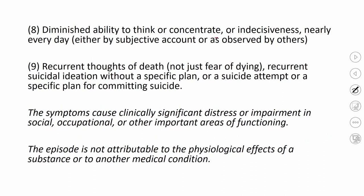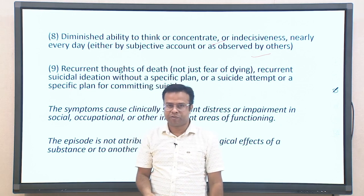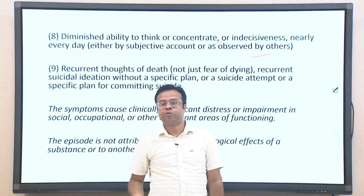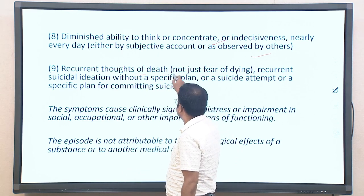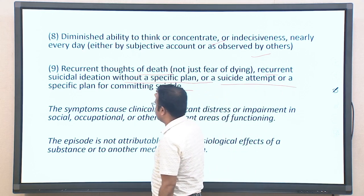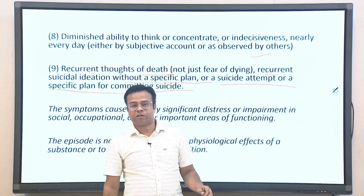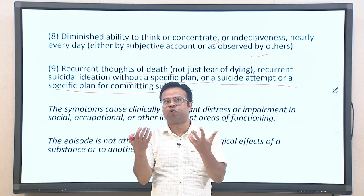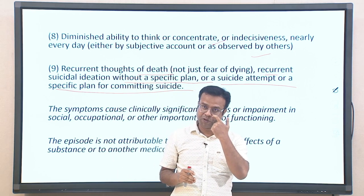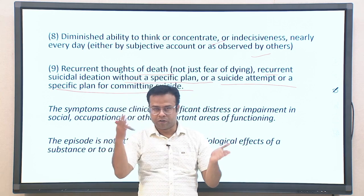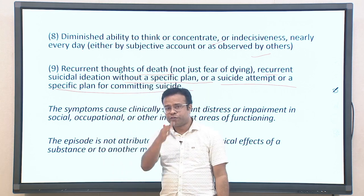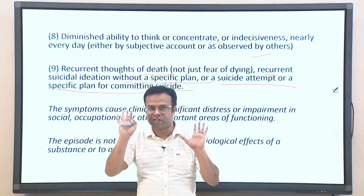Eighth is diminished ability to think, concentrate, or indecisiveness nearly every day — lack of concentration follows naturally from lack of interest. Ninth is recurrent thoughts of death, recurrent suicidal ideation without a specified plan, or a suicidal attempt or specific plan for committing suicide. Out of these nine symptoms, at least five should be present, with the first two being particularly compulsory.